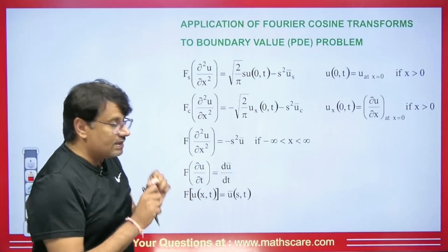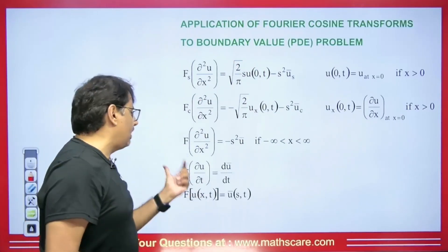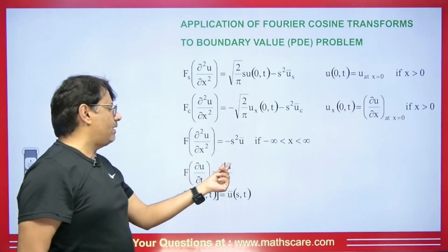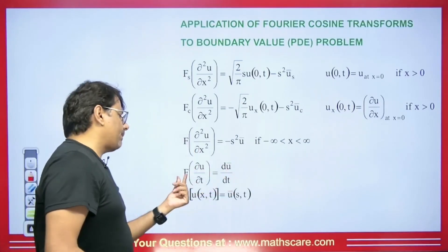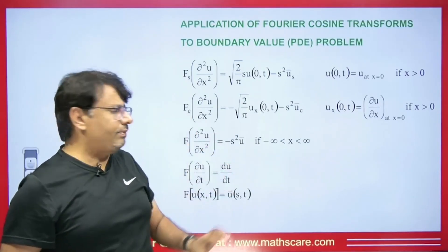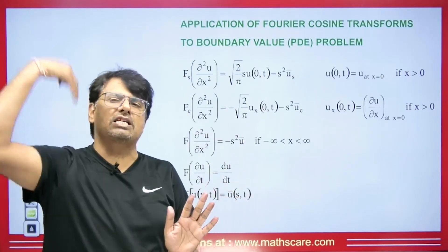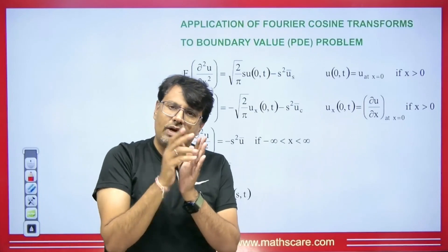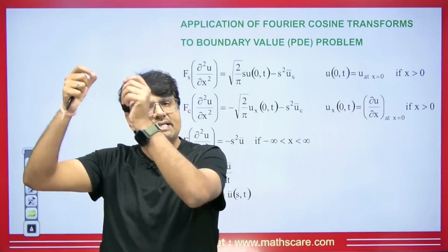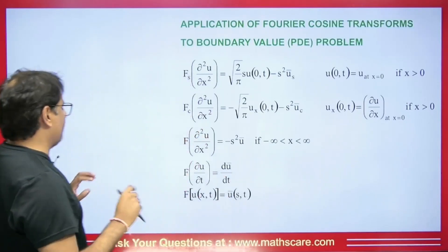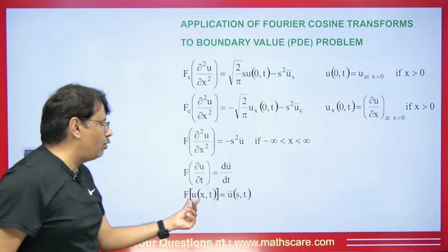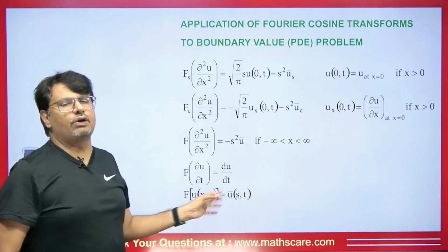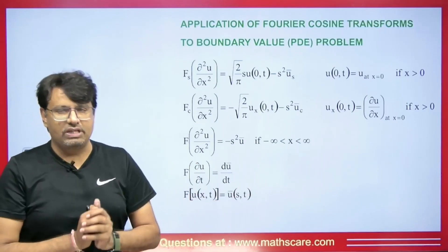When we apply the Fourier transform to del u by del t, it becomes dū/dt. Under the sine or cosine transform it similarly becomes dū_s/dt or dū_c/dt — t does not change, just as x was not affected by the Laplace transform. So applying the Fourier transform acts on x and treats t as it is. If we take the Fourier transform of u(x,t), t stays the same, x is replaced by s, and u becomes ū.